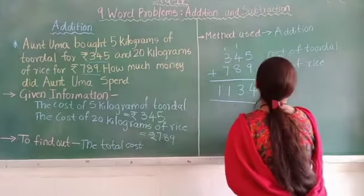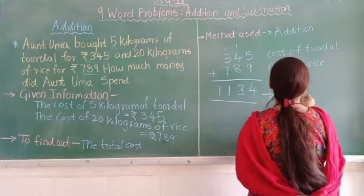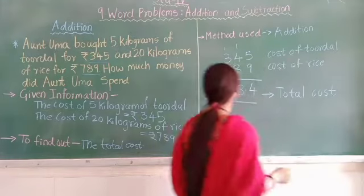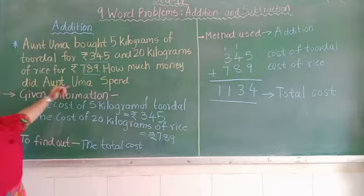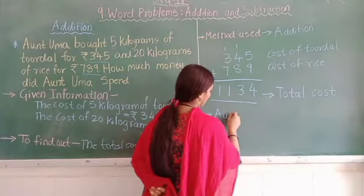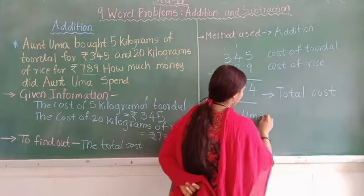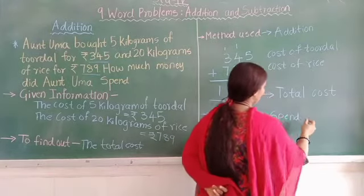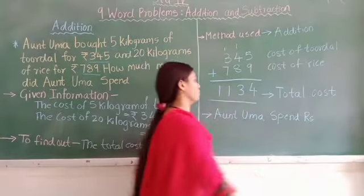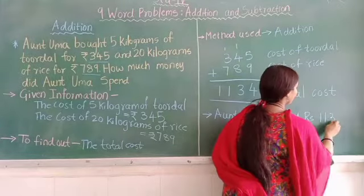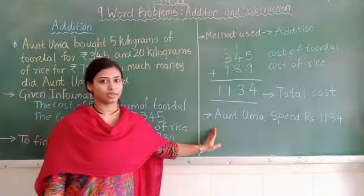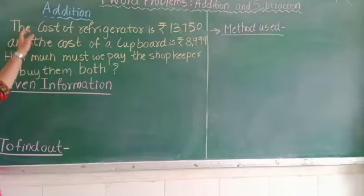So here we have got the total. How much money did Aunt Uma spend? We will write the final statement: Aunt Uma spent Rs. 1,134. This is the final statement. Have you all understood? Let us take another example.